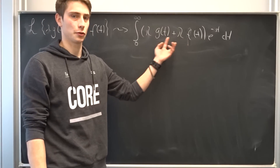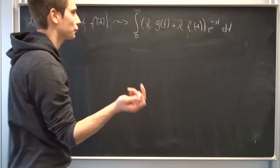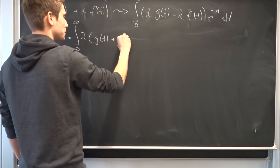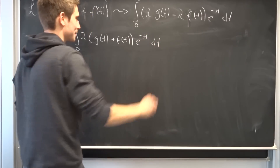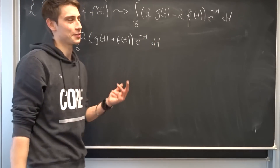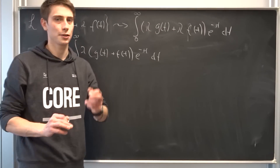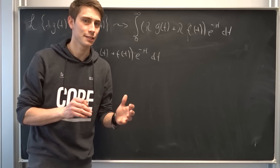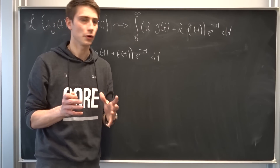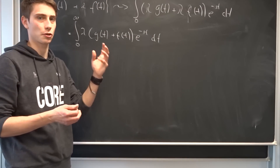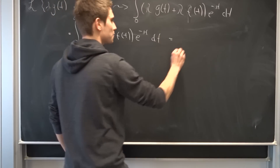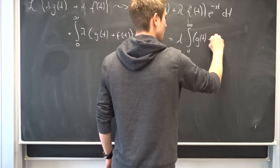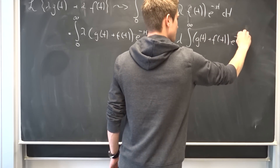We can factor out lambda since it is a common factor of g(t) and f(t). So that's the improper integral of λ·(g(t) + f(t))·e^(−st) dt. Showing the linearity of the Laplace transform is kind of trivial because we know the integral is a linear operator, and the Laplace transform is defined as an integral operation. So we can interchange the constant lambda and the integral operator: this is now λ times the improper integral from zero to infinity of (g(t) + f(t))·e^(−st) dt.